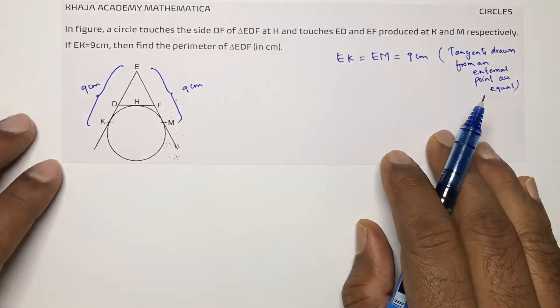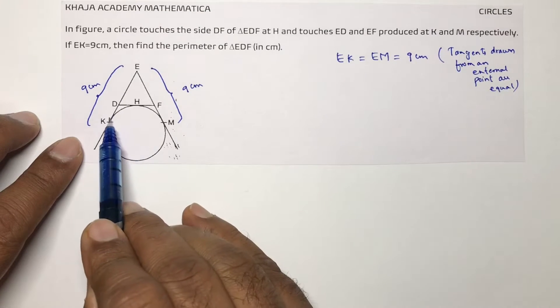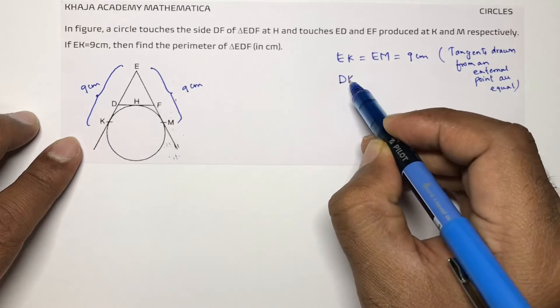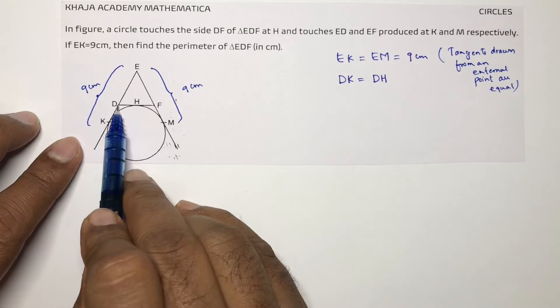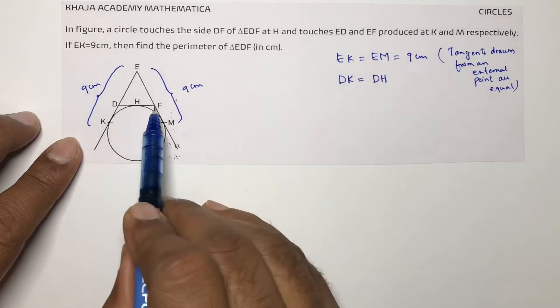Now in the same way, if you will observe here for this circle, DK will be equal to DH. DK equals DH, external point is D and tangents are DK and DH. In the same way, start from F.